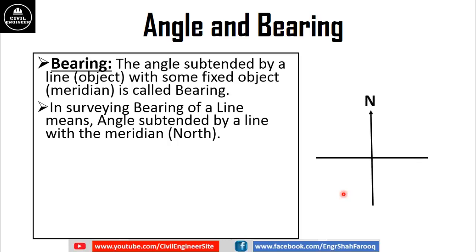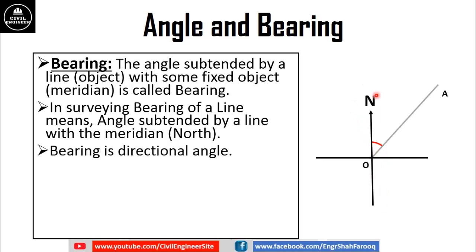Here you can see that if we draw a line OA, it sustains an angle with the north. This angle of a line with the north direction is known as the bearing of a line. Bearing is a directional angle and it shows us the direction or the location of a line or object.